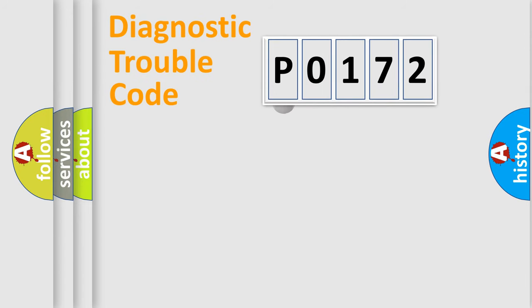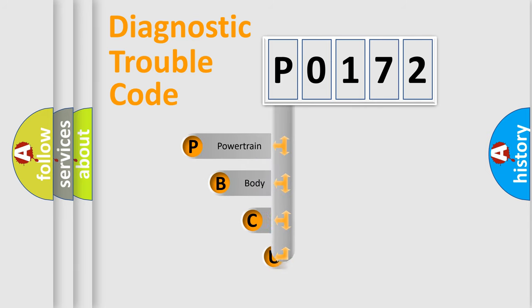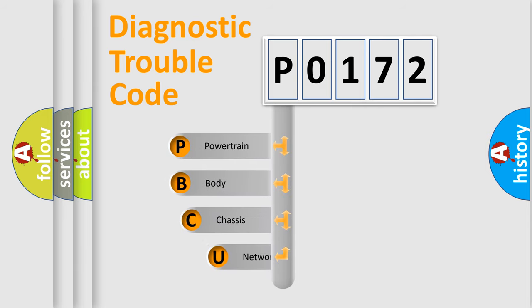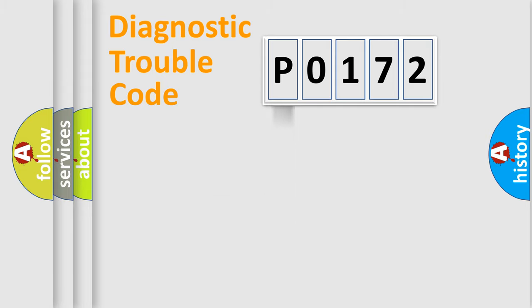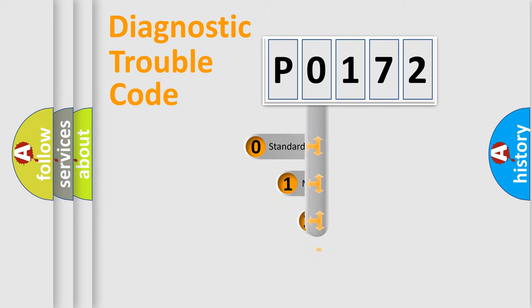First, let's look at the history of diagnostic fault code composition according to the OBD2 protocol. We divide the electric system of an automobile into four basic units: powertrain, body, chassis, and network. This distribution is defined in the first character of the code.